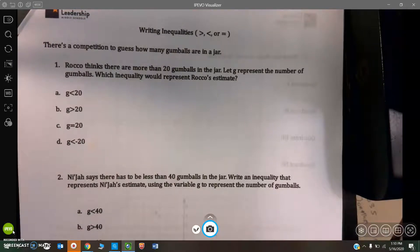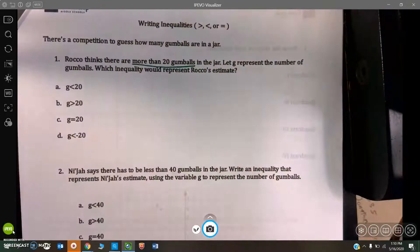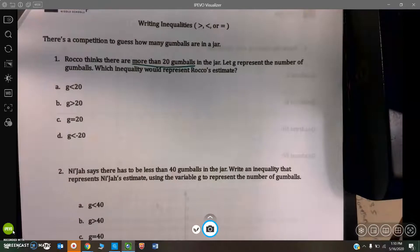There is a competition to guess how many gumballs are in a jar. Rocco thinks there are more than 20 gumballs in the jar. Let G represent the number of gumballs. Which inequality would represent Rocco's estimate?